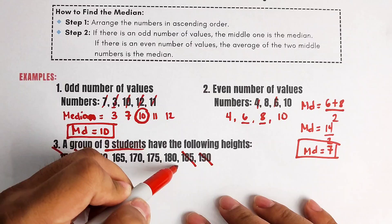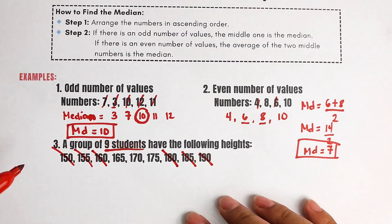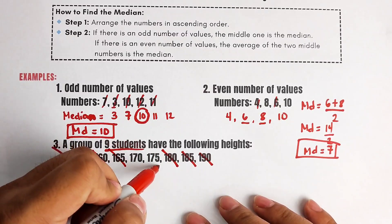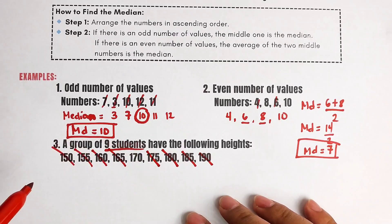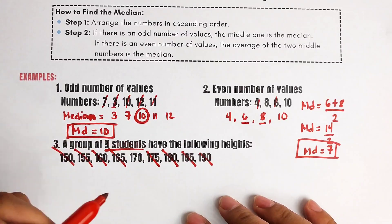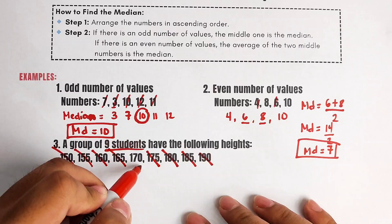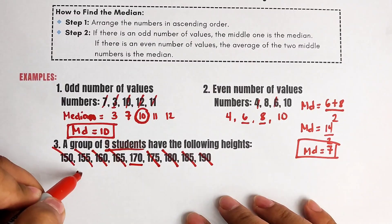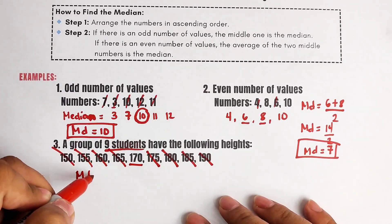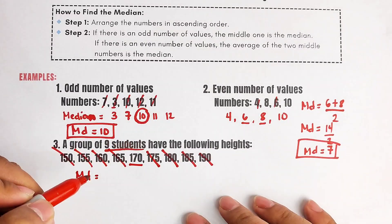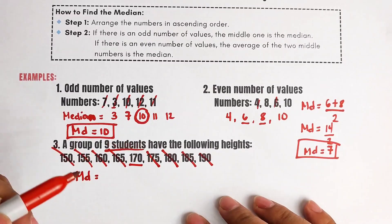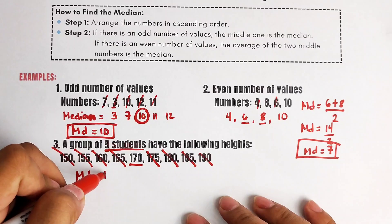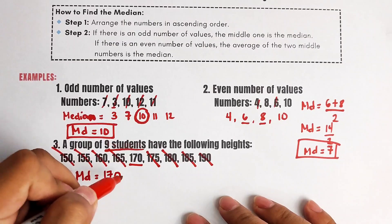The values are 160, 180, 165, and 175 — and as you can see, the middle number is revealed. The median of the heights of the 9 students is simply 170.